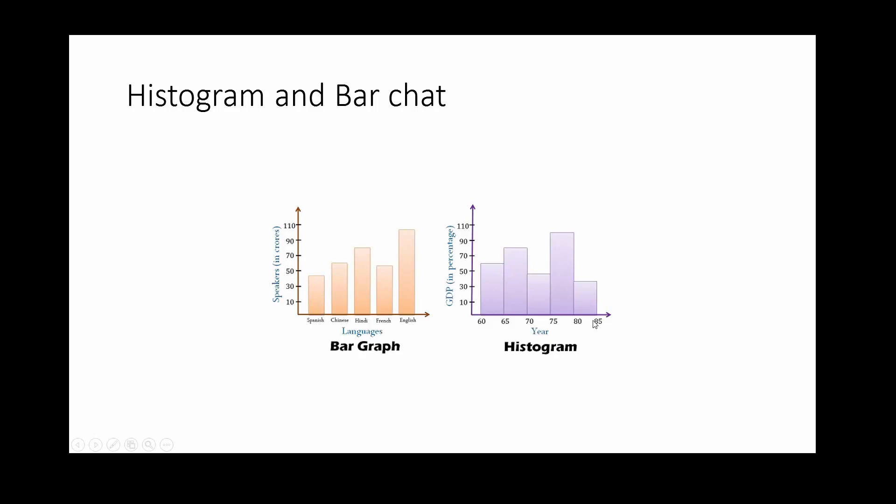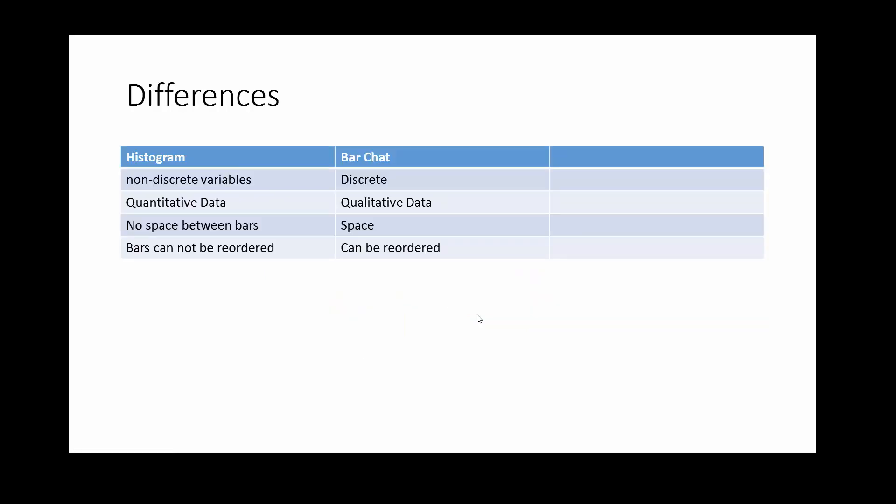But here, you cannot change. Like you cannot bring 85 before 60. That won't make any sense. So the bars cannot be reordered in histogram. Whereas you can very well reorder them in bar chart.